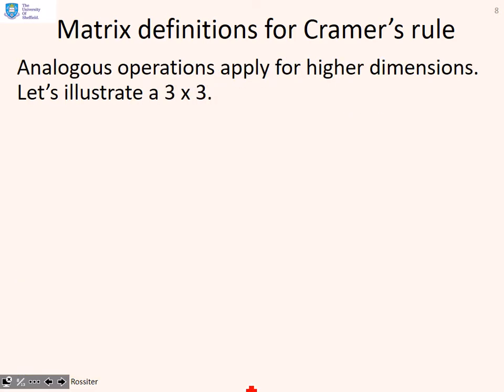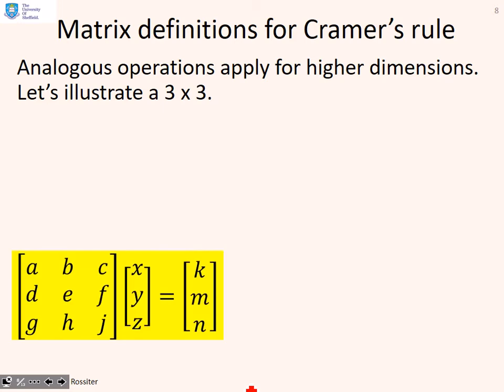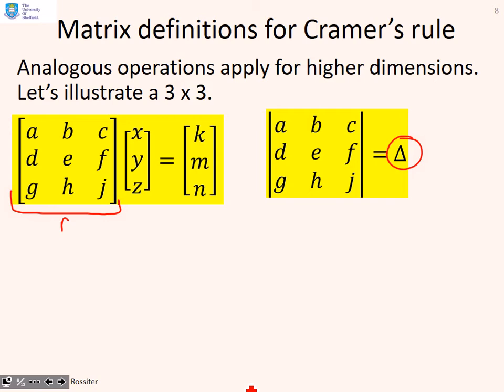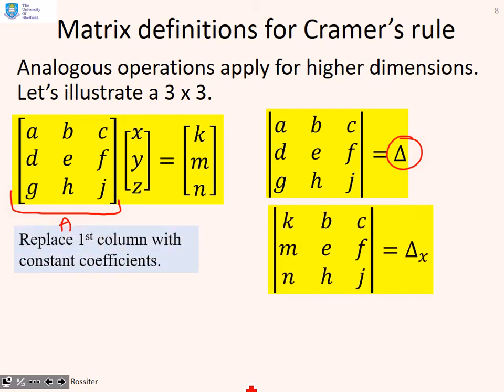We can also do this for a 3 by 3 matrix, and you'll see it's a general rule. Here's three linear simultaneous equations. To find just delta, I take the left-hand matrix A. Now if I want delta_x, I replace the first column with the constant coefficients. I cross the a, d, g and put in place k, m, n. You can see we replace the first column with the constant coefficients.